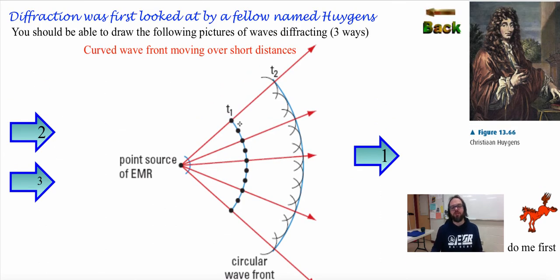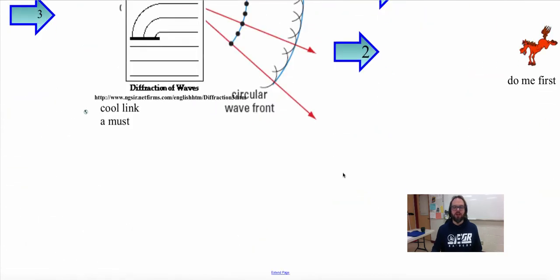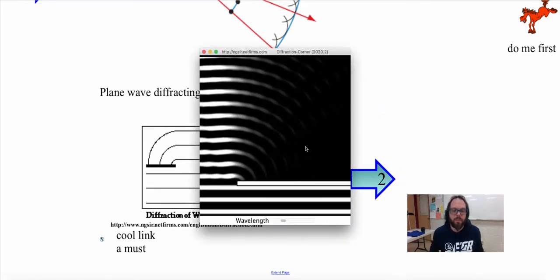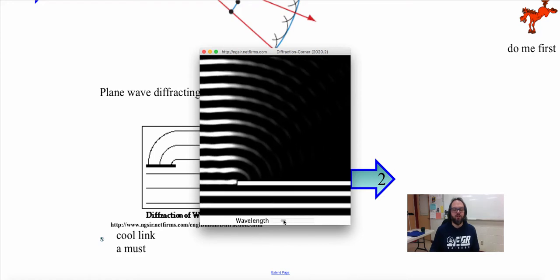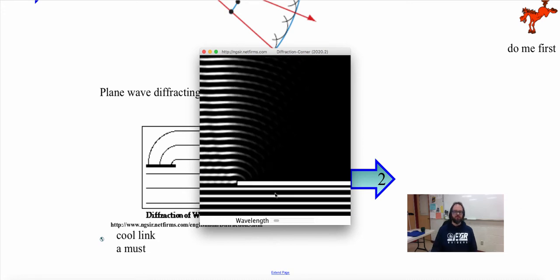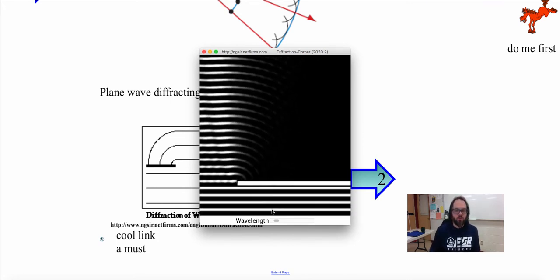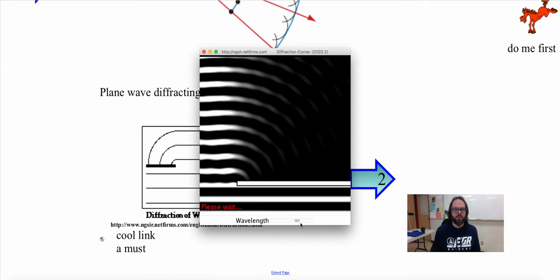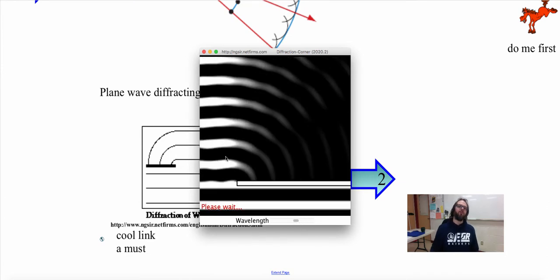You will need to know how to draw this out and understand that each wave has point sources, and the wavelength is the distance between them. Now this next diagram shows diffraction around a corner. If I decrease my wavelength, which means my lines get closer together, it looks like this. And if I increase my wavelength, they bend even more.